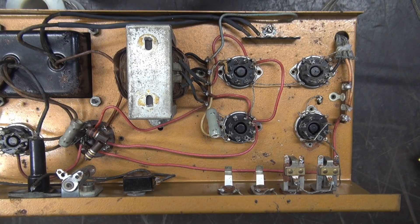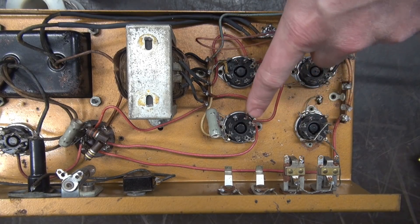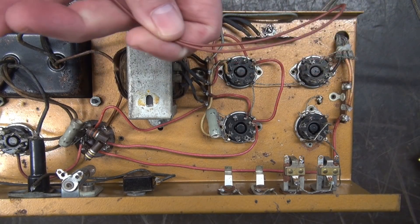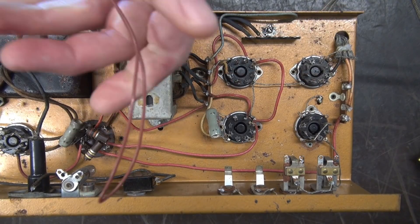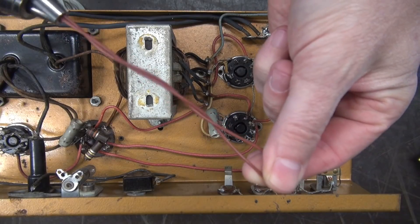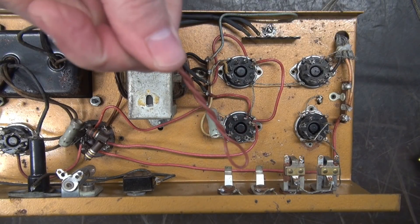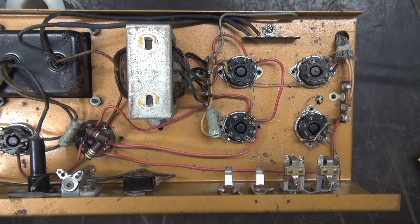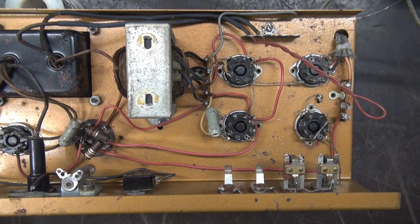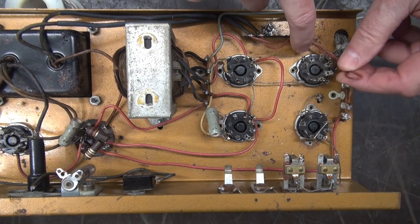For routing of the filaments, we're gonna go from the terminal board, this tube first, up to here, over there, and back. And I'll use my drill to make a nice little twisted pair. In case you're wondering, this is 20 gauge wire. There we go. Take it over to our first tube.